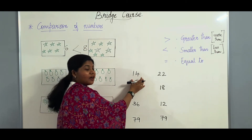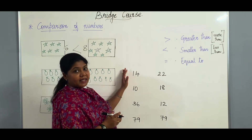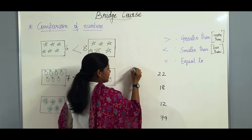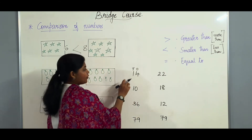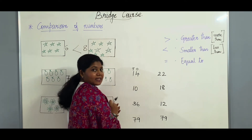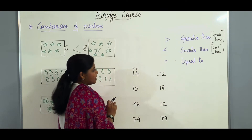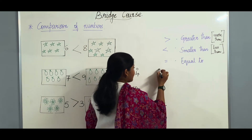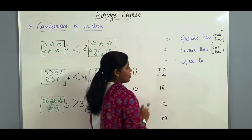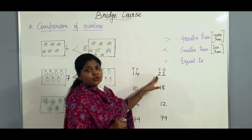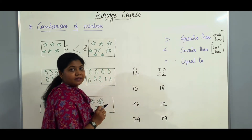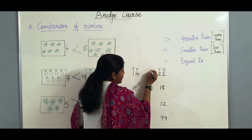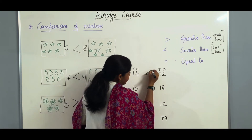When you have numbers, we will always be comparing from the left side, that is from the tens side. So here you have to see which number is on the tens side. We have 1 here — so 1 ten is 10. And on this side we have 2 — so 2 tens makes 20. So which number is greater? Yes, 22 is greater. So the crocodile will be eating the number 22.